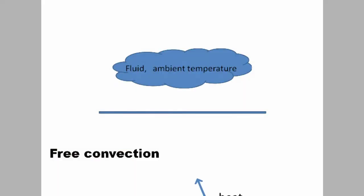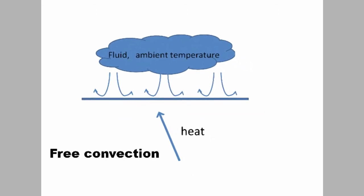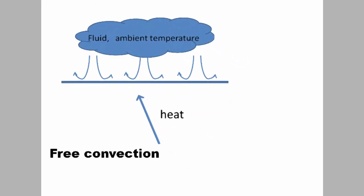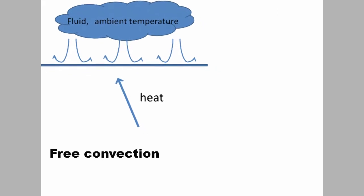The first method to consider is free convection. In free convection, buoyancy forces govern the flow of the convecting fluid over the surface. Buoyancy is due to fluid density gradients combined with a body force, in this case gravity.